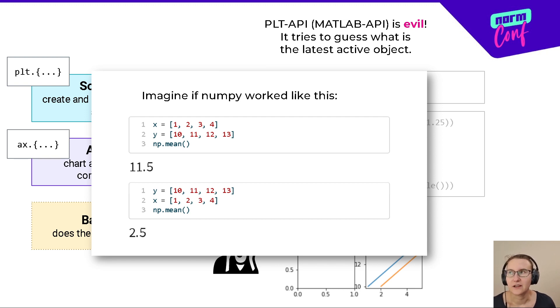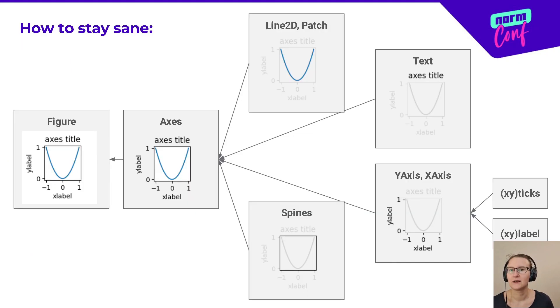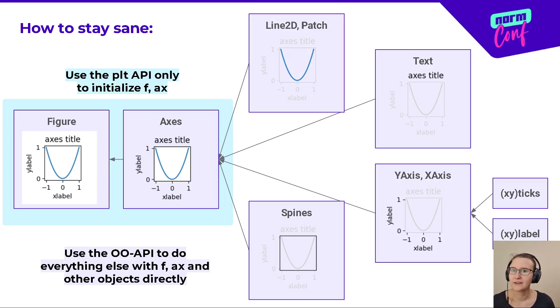Imagine if other libraries work like this. Luckily, the object-oriented API is sane. It lets us control and modify artists directly, also on a very low level. So what can we do in practice? If we take our graph of components, we can use the PLT API to initialize and lay out the top components, figure and axes, because there is no guesswork involved, and then do everything else directly using the object-oriented API.